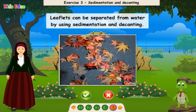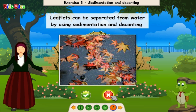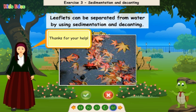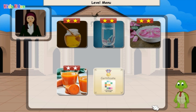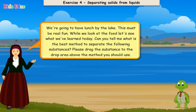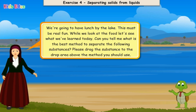Leaflets can be separated from water by using sedimentation and decanting. False! You're right! Thanks for your help. We're going to have lunch by the lake. This must be real fun. While we look at the food, let's see what we've learned today. Can you tell me what is the best method to separate the following substances? Please drag the substance to the drop area above the method you should use.